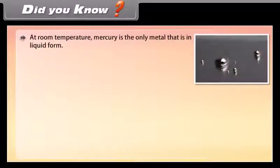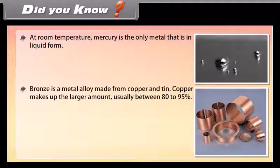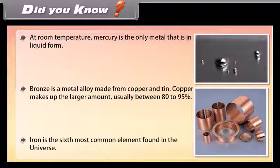Did you know? At room temperature, mercury is the only metal that is in liquid form. Bronze is a metal alloy made from copper and tin. Copper makes up the larger amount, usually between 80 to 95 percent. Iron is the sixth most common element found in the universe.